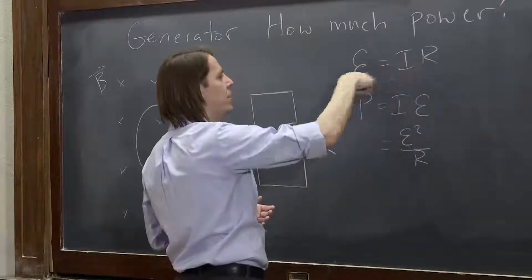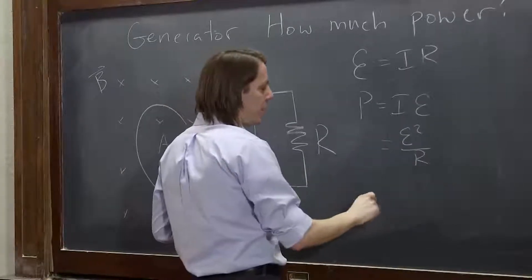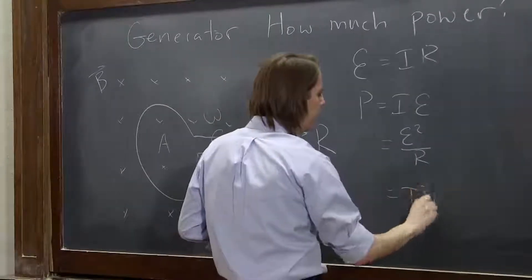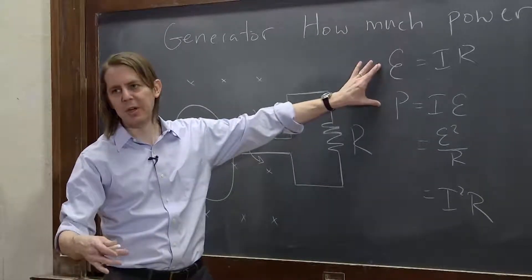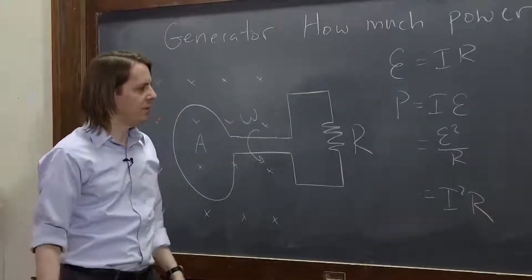If you wanted to get the current, it would just be the EMF over R. You could write it that way, or you could write it as I squared R. It's really just these two equations being combined in different ways, just like it was for the DC circuit.